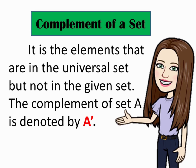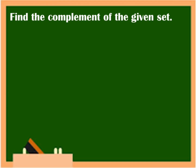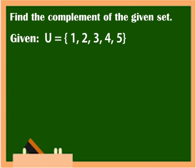So, to understand it further, I have here an example. For example, we have U is equal to 1, 2, 3, 4, 5. And A is equal to 2 and 4. Now, we are going to find A complement.